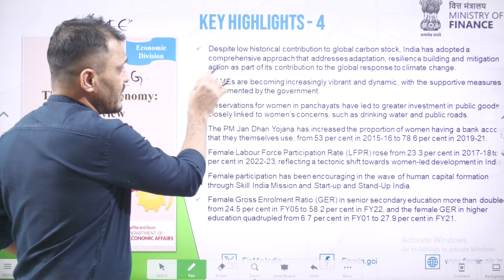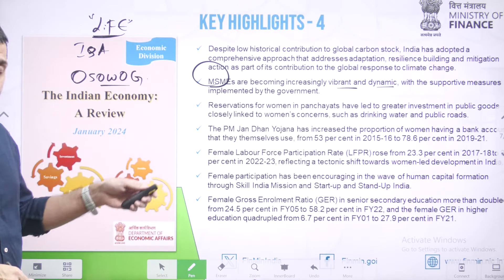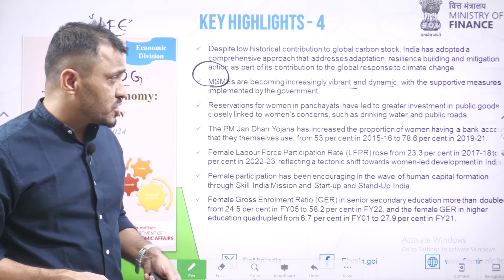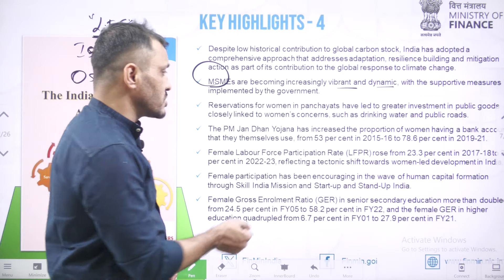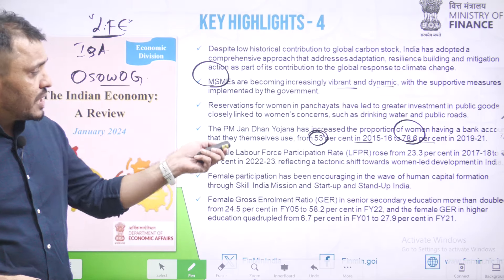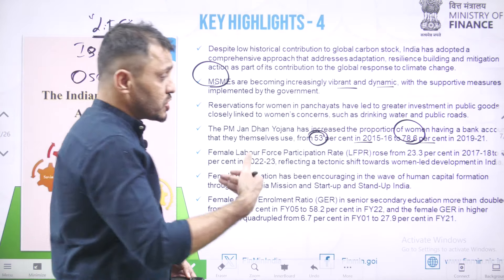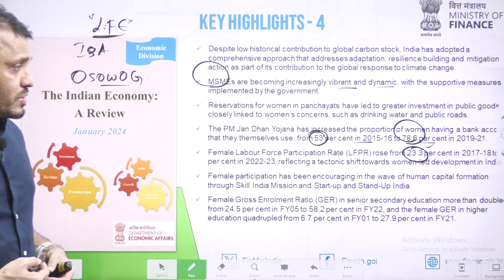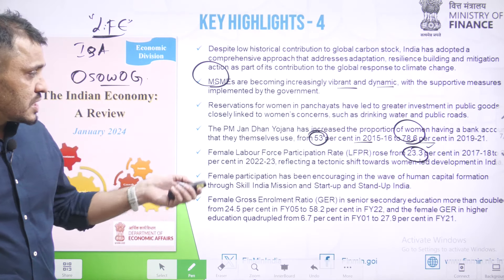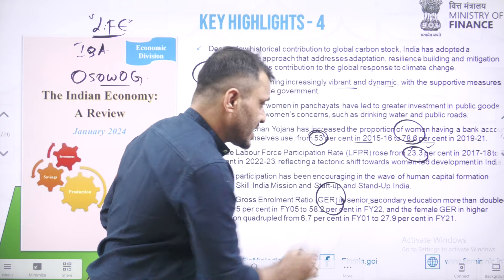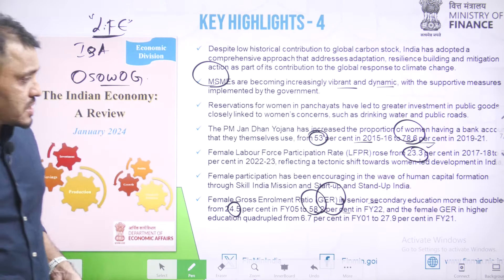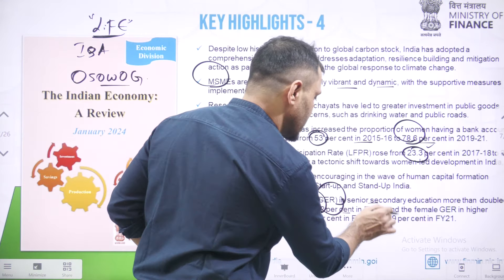MSMEs are becoming increasingly vibrant and dynamic due to supportive measures implemented by the government. Nari Shakti has been strongly encouraged over the last 10 years. Through PM Jan Dhan Yojana, the proportion of women having a bank account increased from 53% to 78.6%. The female labor force participation rate — the percentage of females participating in the labor force — increased from 23.3% to around 37%. The gross enrollment ratio in secondary education doubled, from 24.5% to 58.2%, and the female gross enrollment ratio in higher education increased almost four times, from 6.7% to 27.9%.